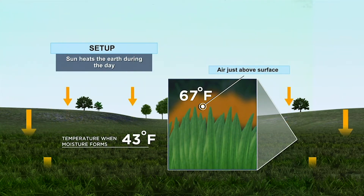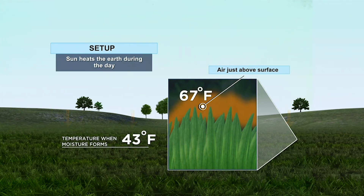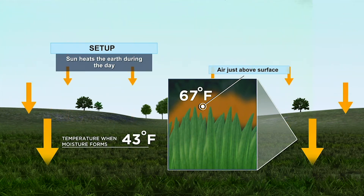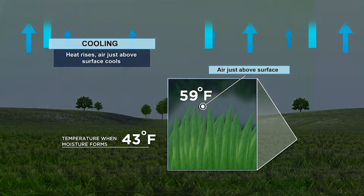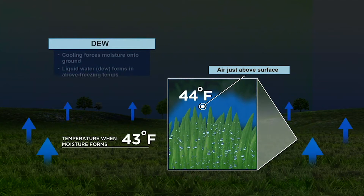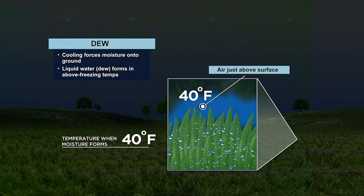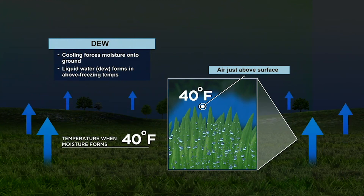Let's take a closer look at this. Pay attention to the number in the bottom left — this is your dew point. Again, that's the temperature that the air needs to be cooled to for moisture to form. In this example, the air just above the surface warms to about 67 degrees through the day. By nightfall, all of that heat escapes, allowing the air just above the surface to cool within a degree or so of the dew point. The two values — the air temperature and the dew point — line up when the process comes to an end. The cooling forces moisture onto the ground. Liquid water, or dew, forms in above-freezing temperatures. This is when you wake up to water on the ground and on your car.